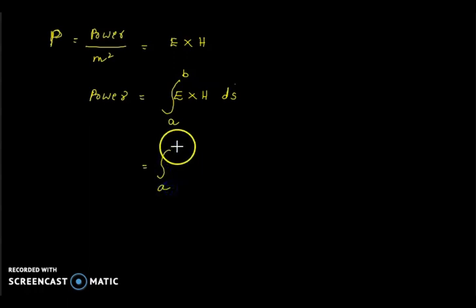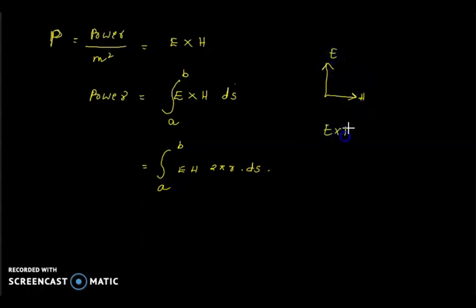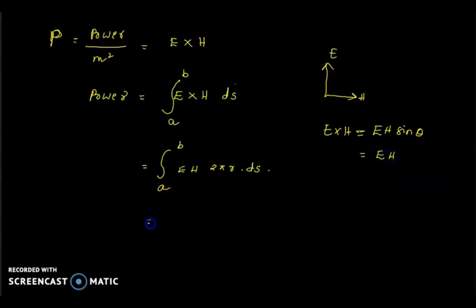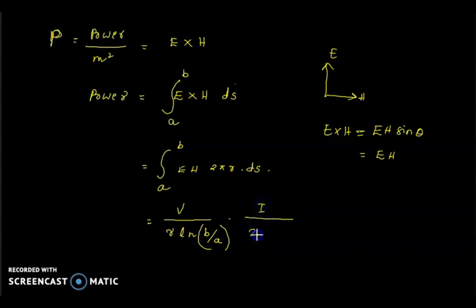Substituting ds into the integral, the power is the integral from a to b of E·H·2πr·dr. Since E and H are orthogonal vectors, E cross H equals E·H·sin(90°) = E·H. Substituting the expressions: E = V / (r · ln(b/a)) and H = I / (2πr), the integrand becomes [V / (r · ln(b/a))] · [I / (2πr)] · 2πr·dr.